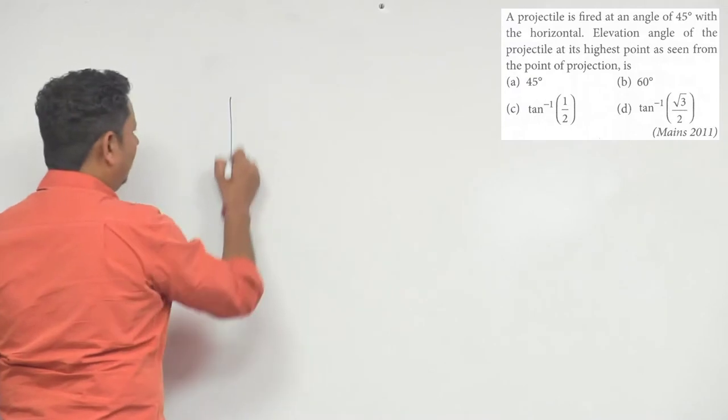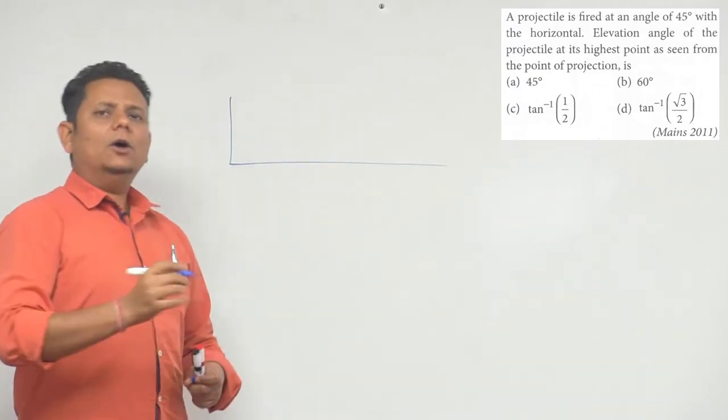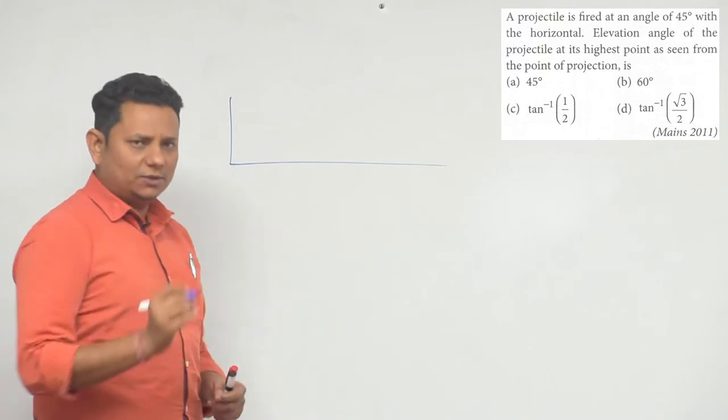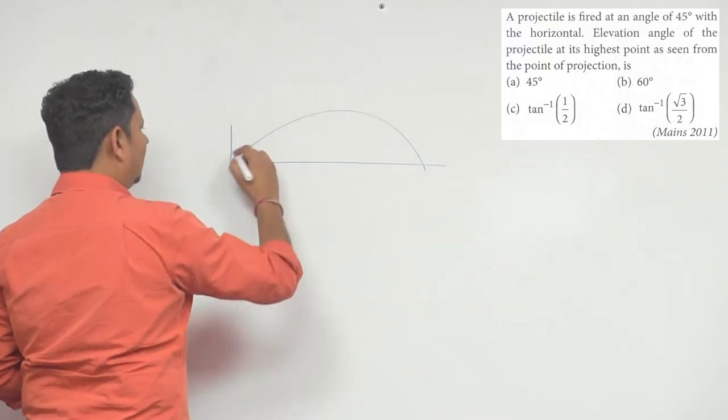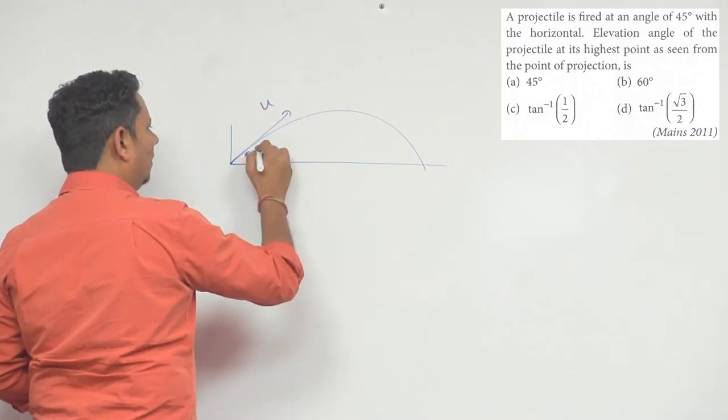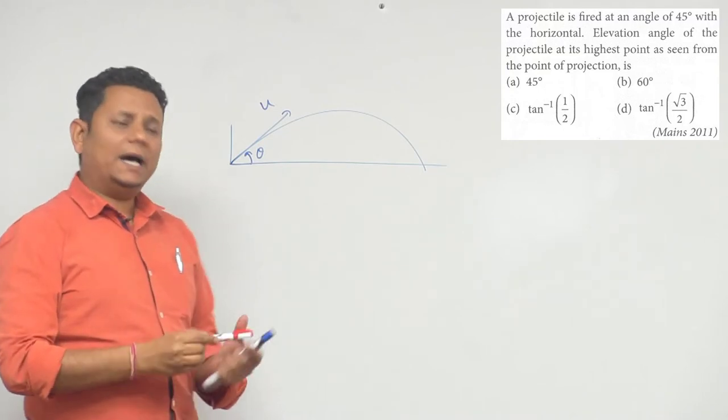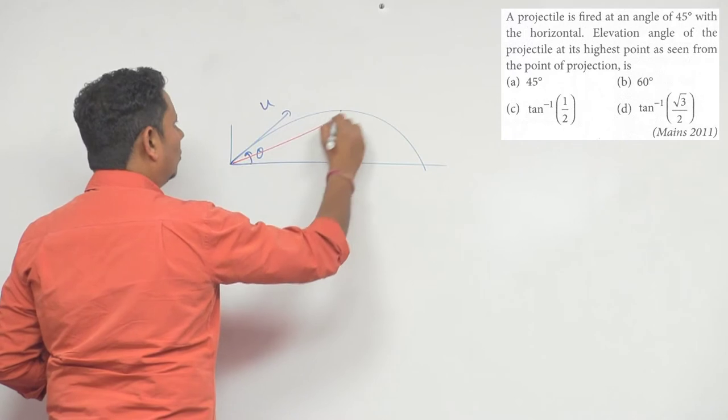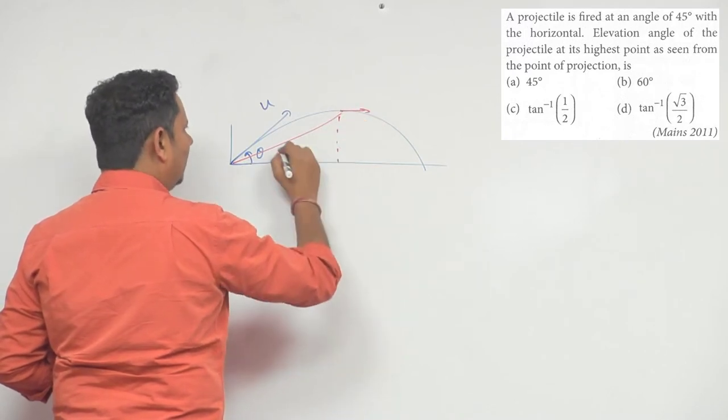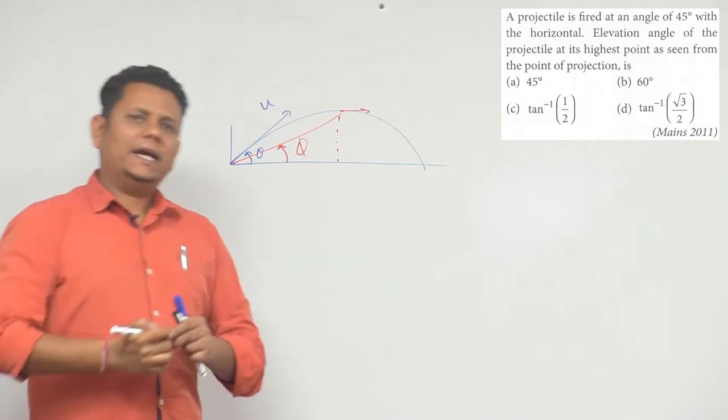Let's do it as a general equation and then we will do it as a specific question. For example, you have launched with initial velocity u at angle theta. When the projectile reaches its highest point, the angle phi will be what we need to find.